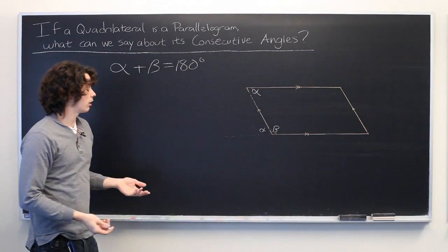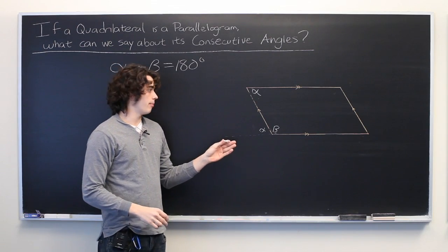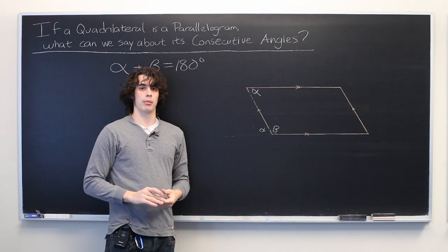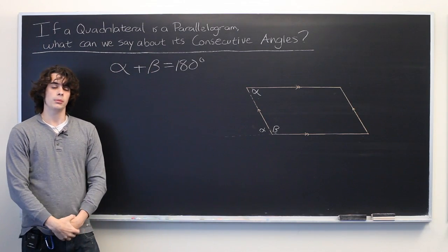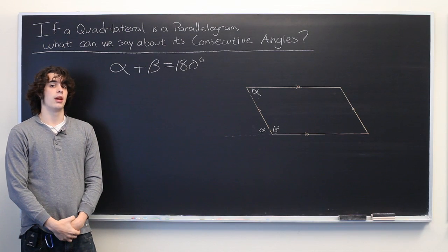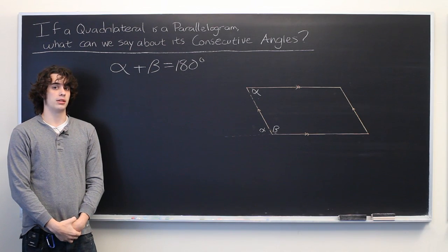So what we can conclude is that consecutive angles in a parallelogram must add up to 180 degrees. In other words, they must be supplementary. My name is Ryan Malloy, and we've just discussed if a quadrilateral is a parallelogram, what can we say about its consecutive angles?